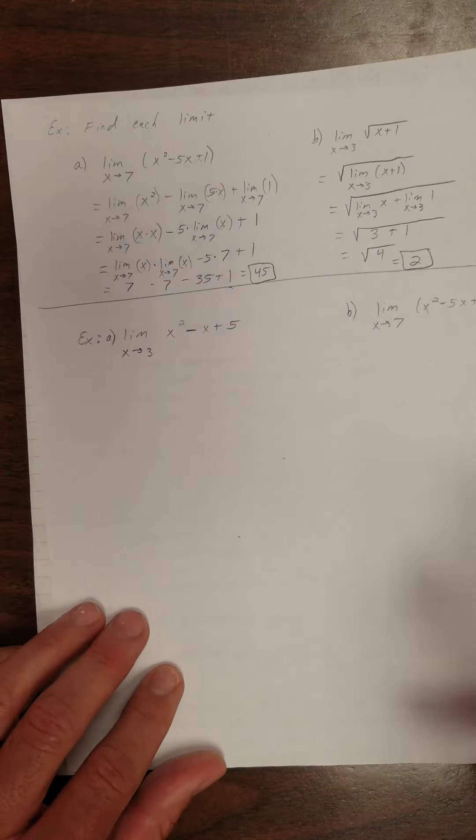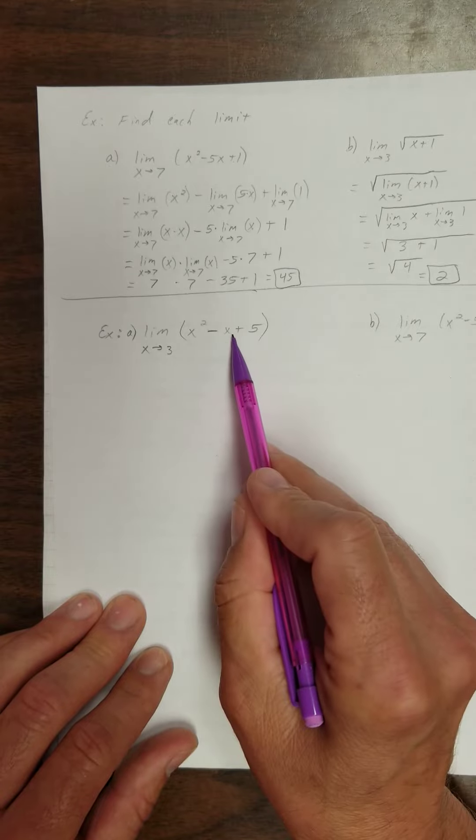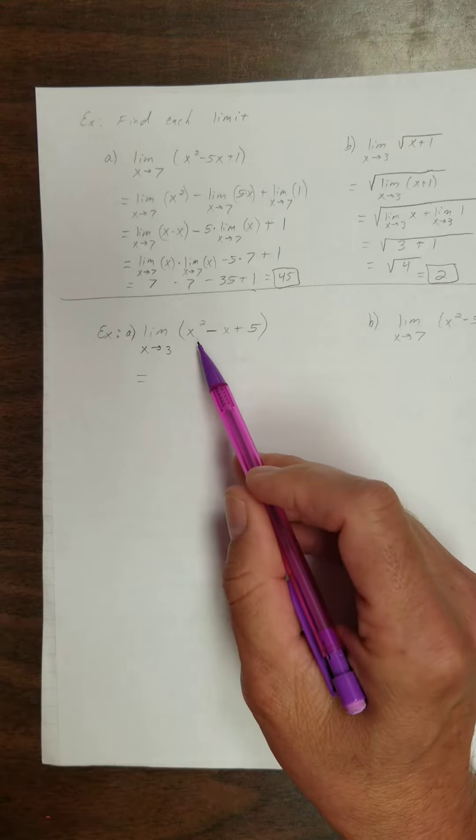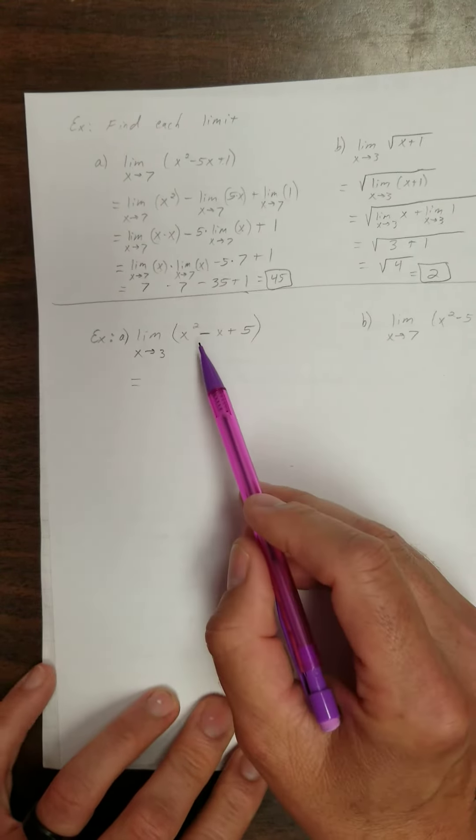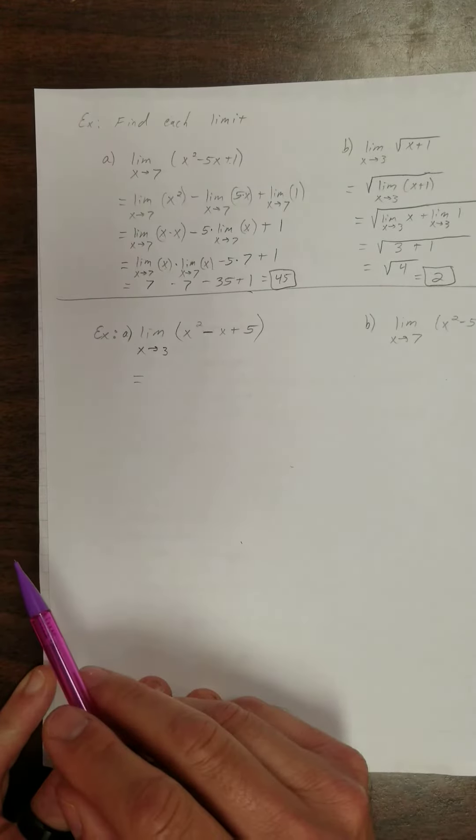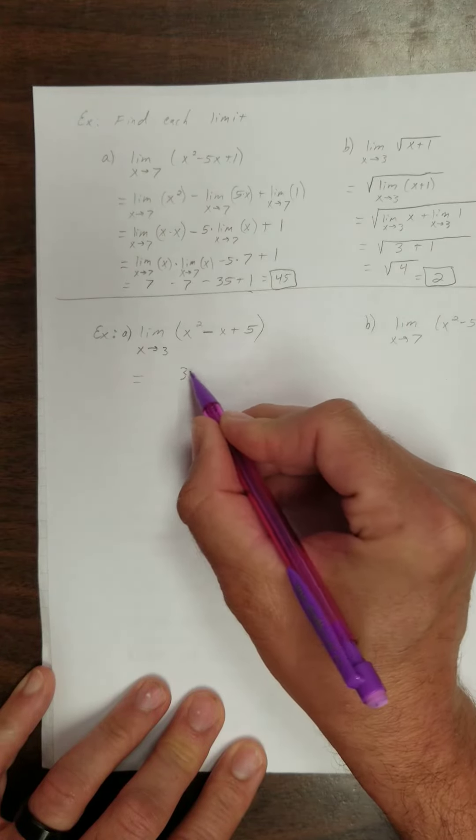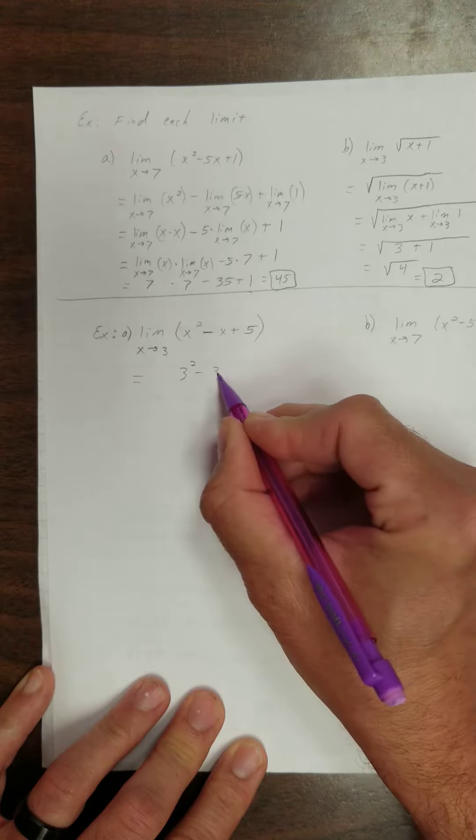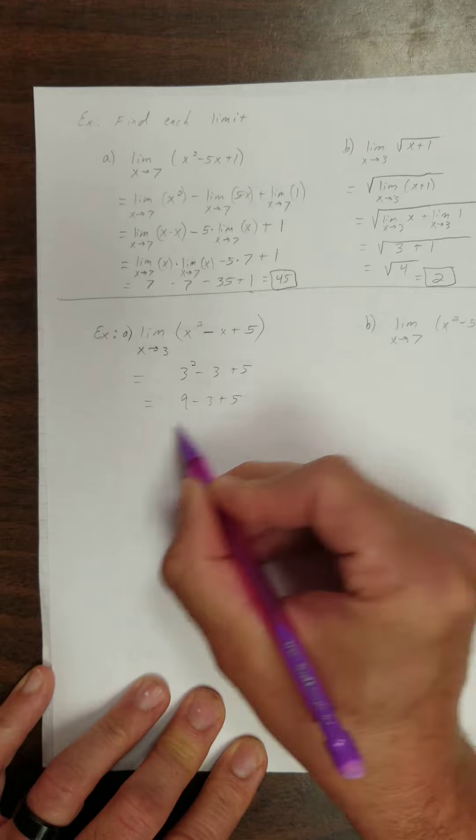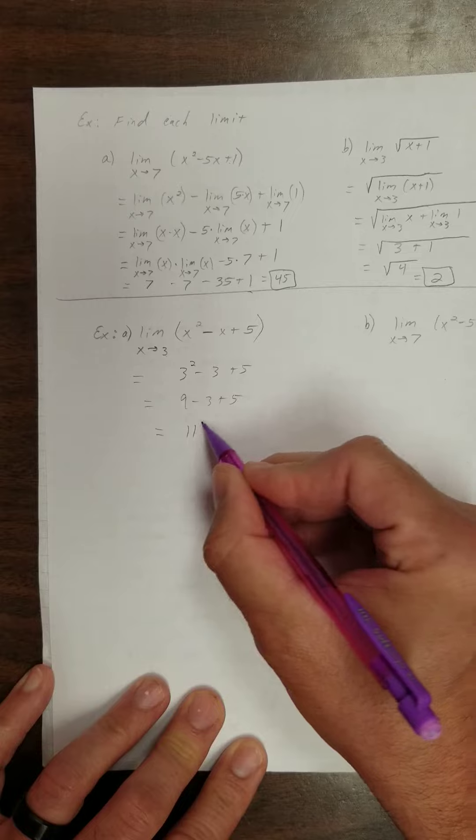Let's look at an example here. Limit as x approaches 3 of this polynomial, x squared minus x plus 5. Remember in algebra how you had to tell if something was a polynomial or not? Well, that's why you had to do it, so whenever you get to calculus, this becomes easier. This is a polynomial. So according to the statement we just read, we can sub in 3 for each x. So what does that give me? 9 minus 3 plus 5. 9 minus 3 is what? 6. 6 plus 5 is 11.